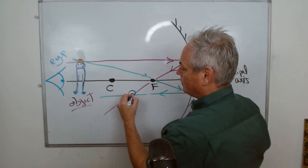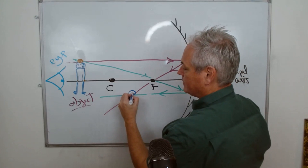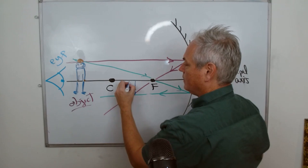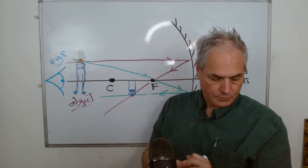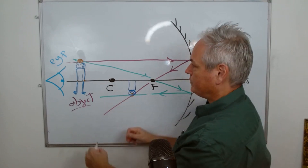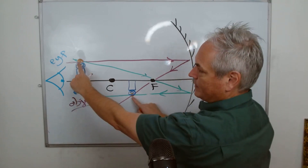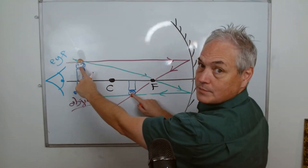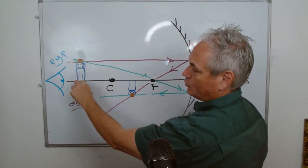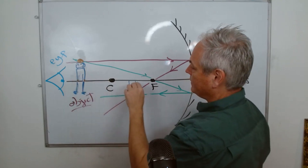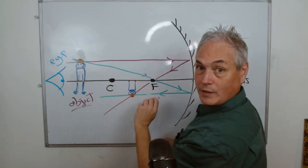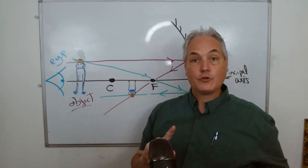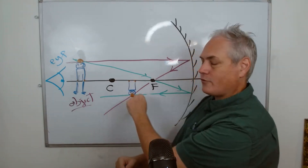Now I can draw the image and see where it is. We have an image forming here, and by proportion we have the head, the smile, and the body. The two points we have on one side correspond to the two points along the principal axis on the other side.